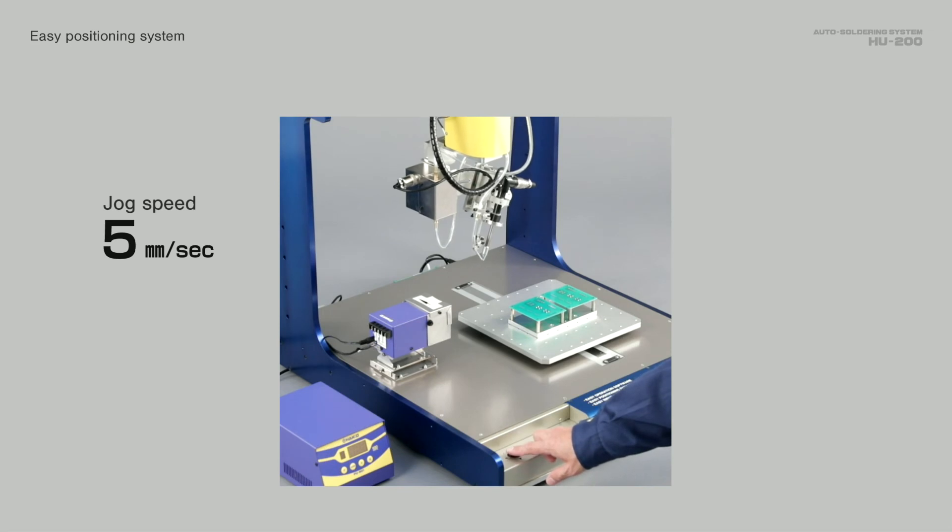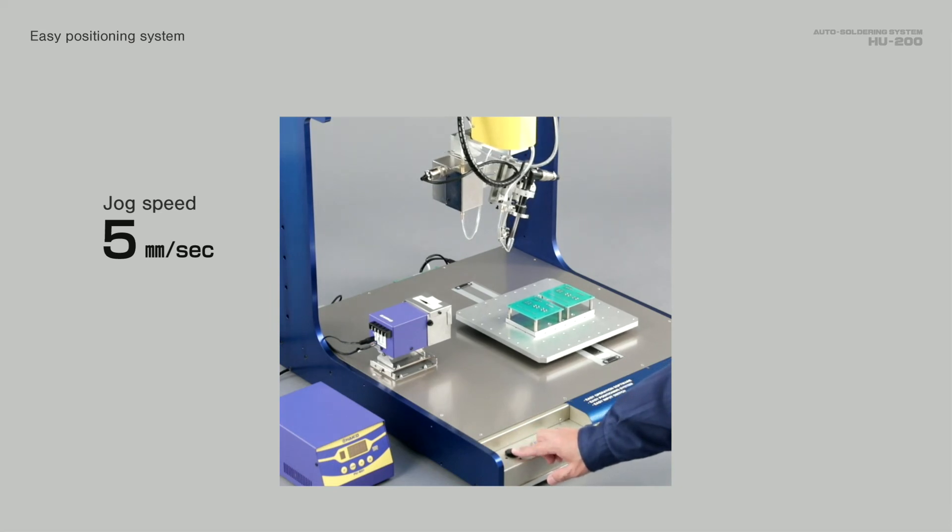When a quick movement is requested, select the higher speed, such as 30 mm per second, and for a slow movement, select low speed, such as 5 mm per second. The iron tip continues traveling while the joystick is tilted.